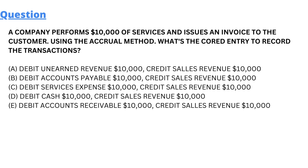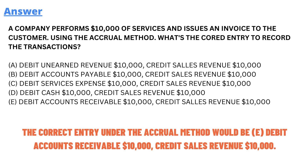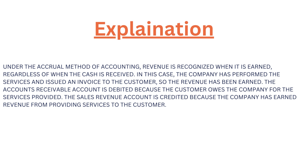The remaining option E — let's read it out: debit accounts receivable $10,000, credit sales revenue $10,000. It is the correct answer. The correct answer is option E: debit accounts receivable $10,000 and credit sales revenue $10,000.